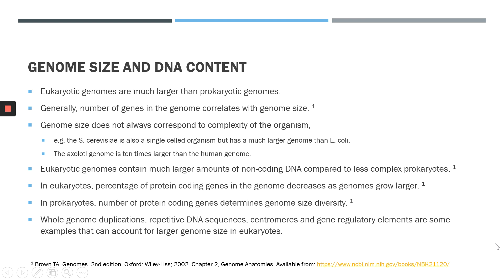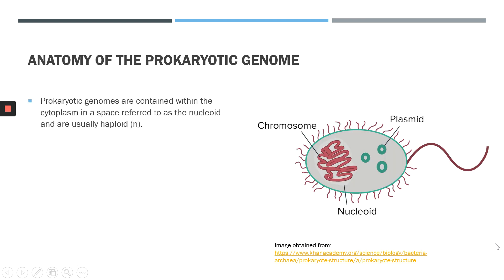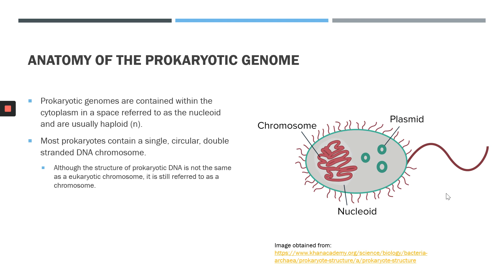Now let's look at the prokaryotic genome in a little bit more detail. The prokaryotic genome is contained within the cytoplasm in a space referred to as the nucleoid. Prokaryotes don't have a defined nucleus, which means their DNA is not enclosed by a membrane. Prokaryotic genomes are also most usually haploid, meaning they don't have two chromosomes. Prokaryotes contain a single, circular, double-stranded DNA chromosome. Although the structure of the prokaryotic chromosome is not the same as the eukaryotic chromosome, it's still referred to as a chromosome. Eukaryotic chromosomes, in contrast, are linear.